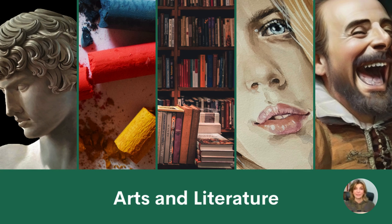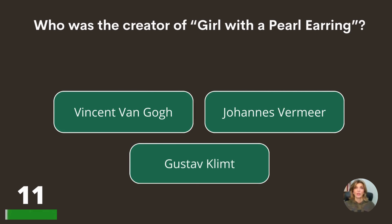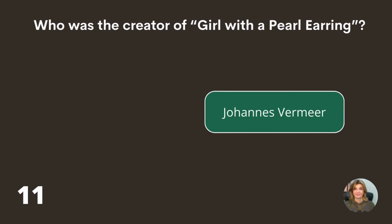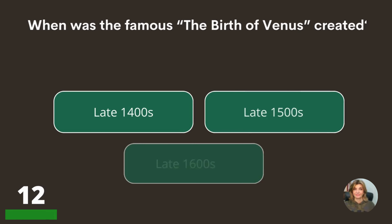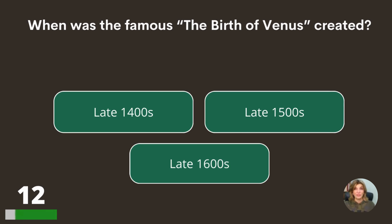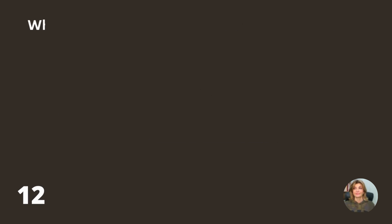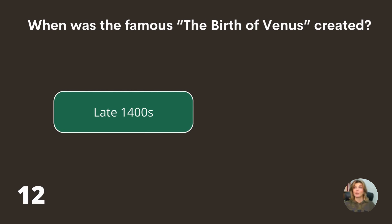Let's go to Arts and Literature. Who was the creator of Girl with a Pearl Earring — Vincent van Gogh, Johannes Vermeer, or Gustav Klimt? Johannes Vermeer. When was the famous The Birth of Venus created — late 1400s, late 1500s, or late 1600s? The late 1400s.